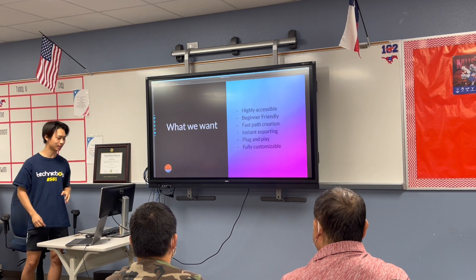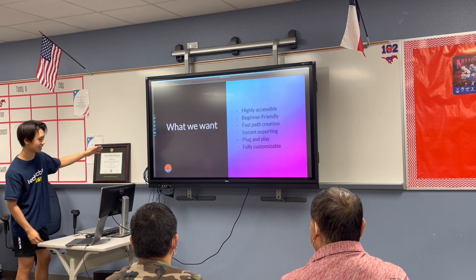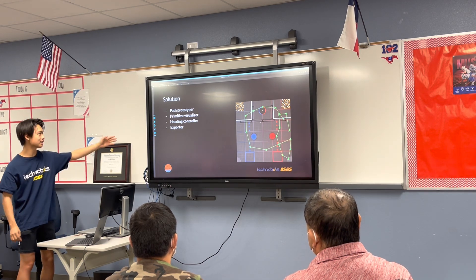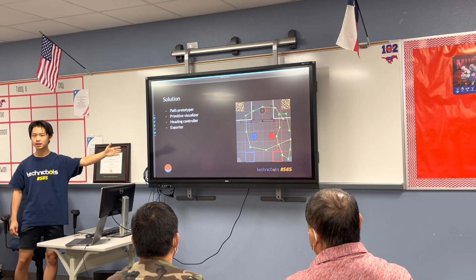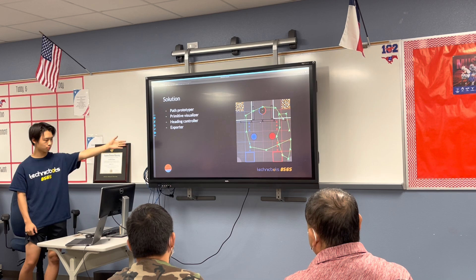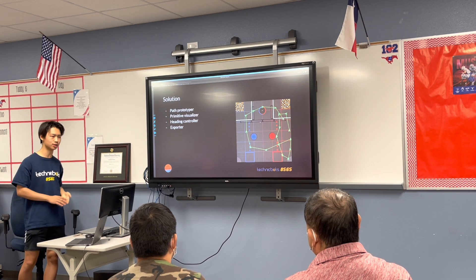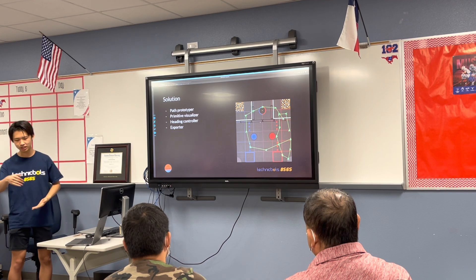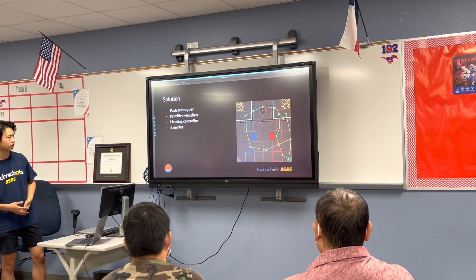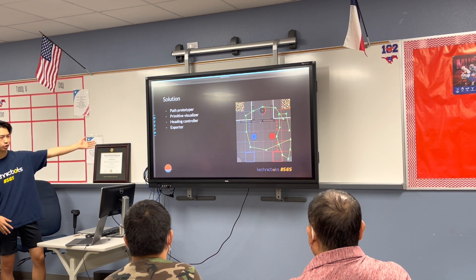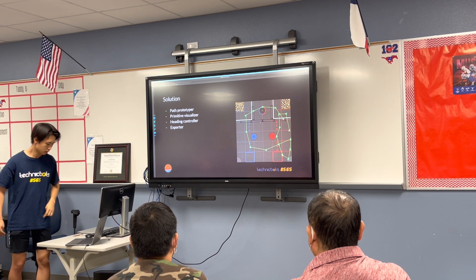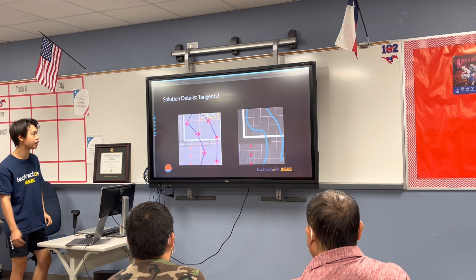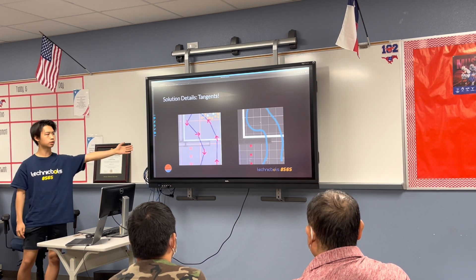I have not made it completely fully customizable yet, but that's a step in the future. This is the solution — it's simply a path prototyper. It has a pretty primitive visualizer, but its exports are completely functional in Roadrunner. They produce really nice and smooth paths that travel quickly, and you're able to control the heading of the robot.